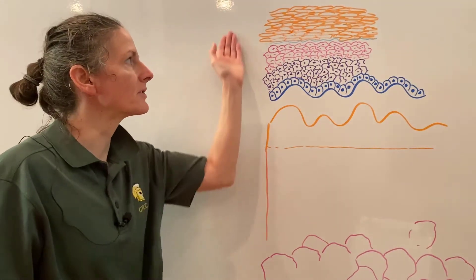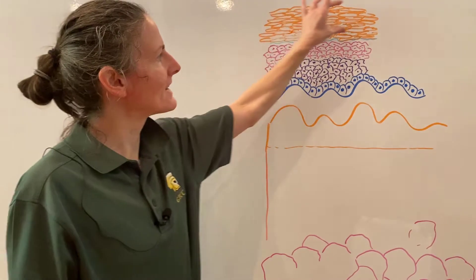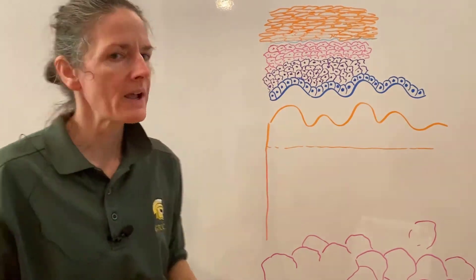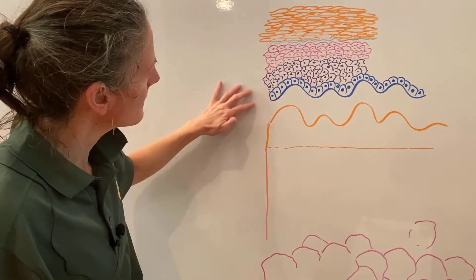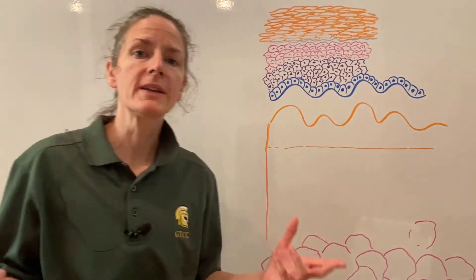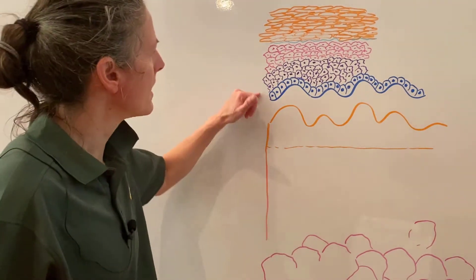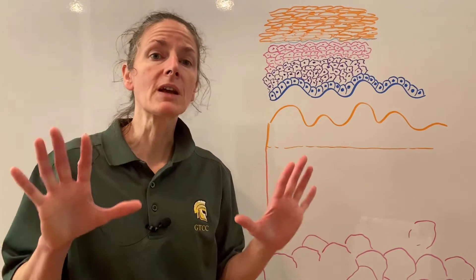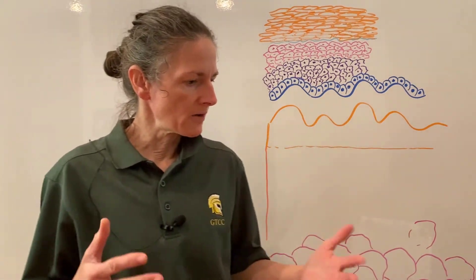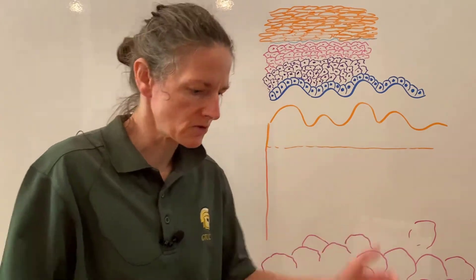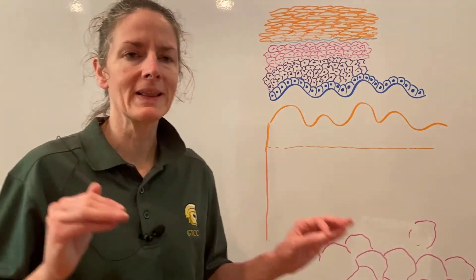We name our epithelia for the type of cells found on top — flattened cells are at the top. The epidermis has four layers of cells in most areas, which we call thin skin — covering most of the body. In specialized areas like the palms of our hands and soles of our feet, we have thick skin with an extra layer of protection and some structural differences.